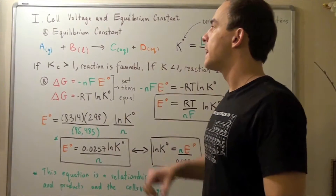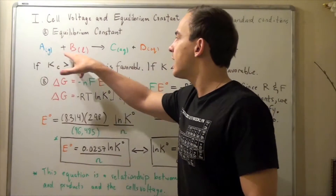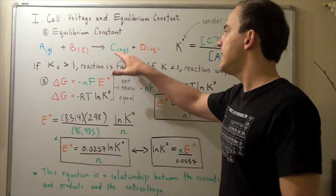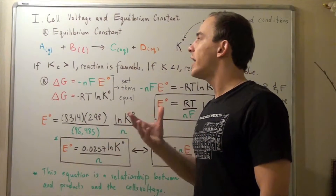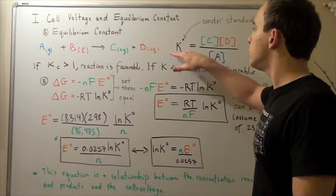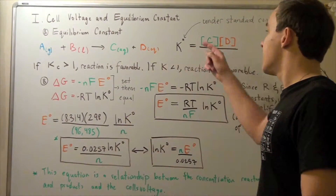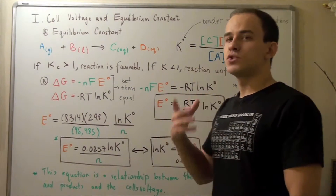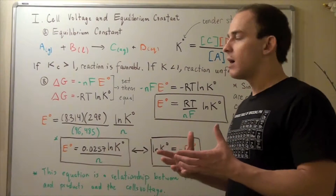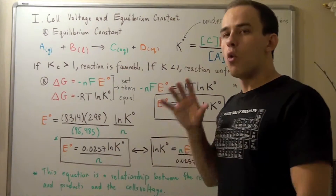Before we look at the relationship, let's remember what the equilibrium constant is. Suppose we have a reaction with two reactants and two products. Our A reactant is in the gas state, our B reactant is in the liquid state, our C product is in the aqueous state, and our D product is in the aqueous state. Let's write the equilibrium constant expression for this reaction, assuming equilibrium has been reached. Our equilibrium constant under standard conditions is equal to the concentration of product C times the concentration of product D, divided by the concentration of reactant A.